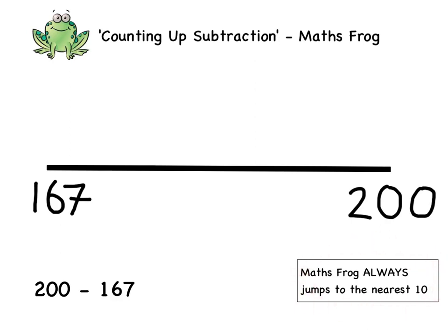Counting up to get to the nearest 10: if we add 1 we get to 168, add another 1 takes us to 169, and add another 1 takes us to 170.